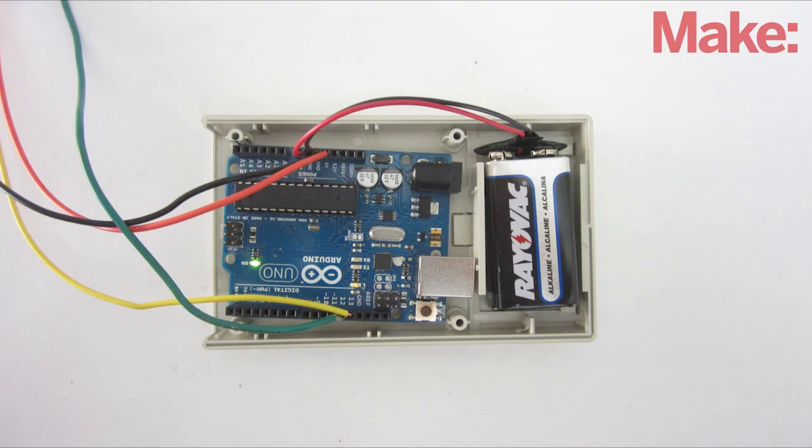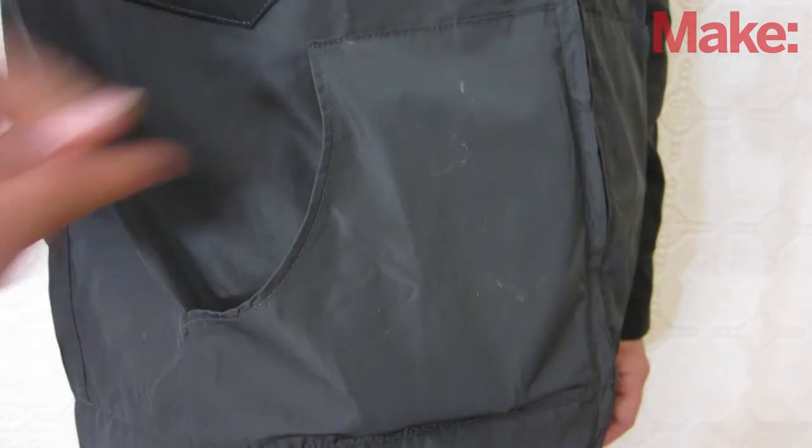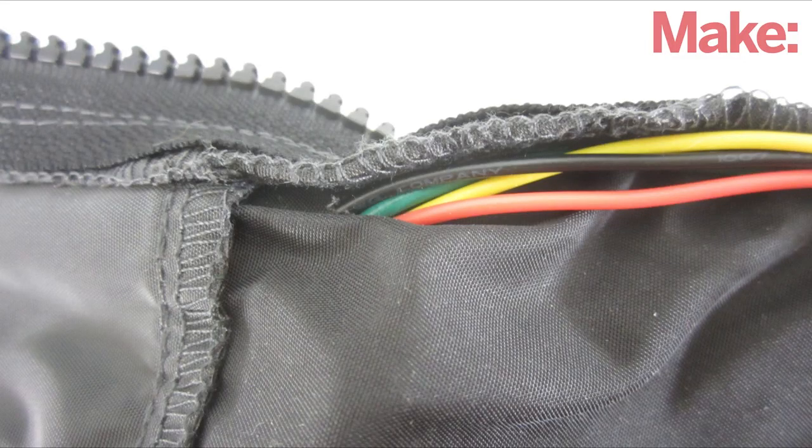Next, I mounted the Arduino and the battery inside a small project enclosure. This fit neatly inside the front pocket. But I did have to cut another small hole for the wires.